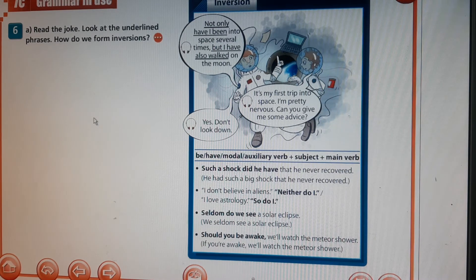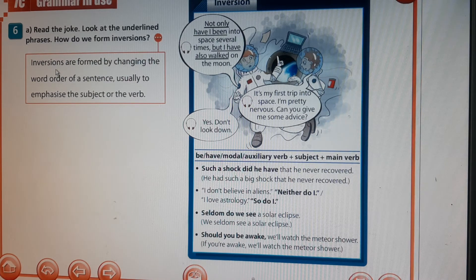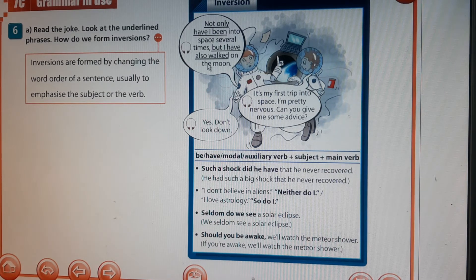Let's look at a joke to see how inversions are formed: 'Not only have I been into space several times, but I have also walked on the moon.' — 'It's my first trip into space, I'm pretty nervous. Can you give me some advice?' — 'Yes, don't look down!' Inversions are formed by changing the word order in a sentence, placing expressions at the beginning to emphasize the verb or the subject.